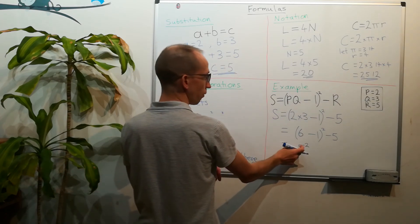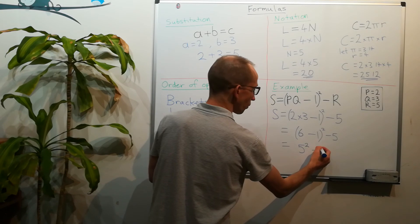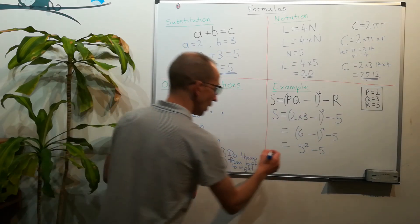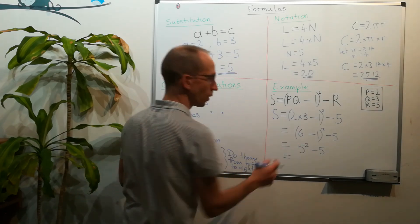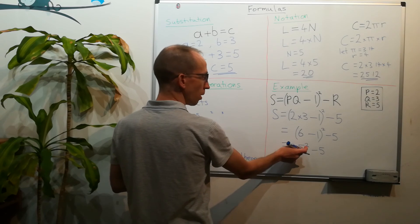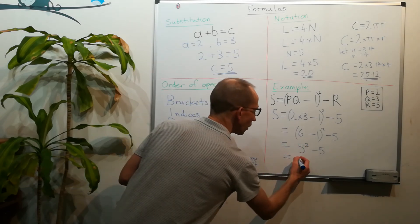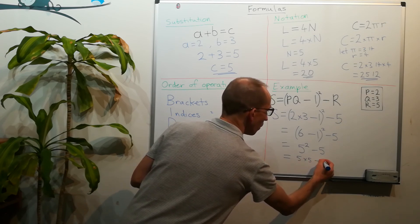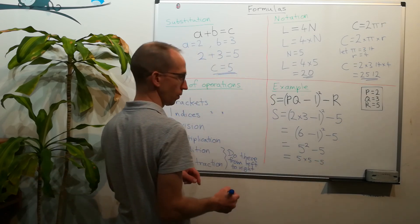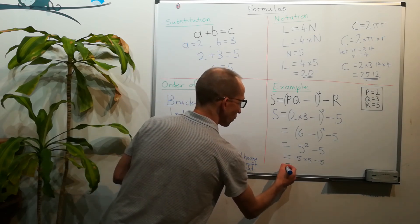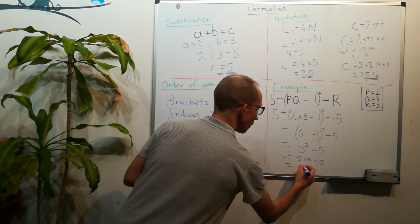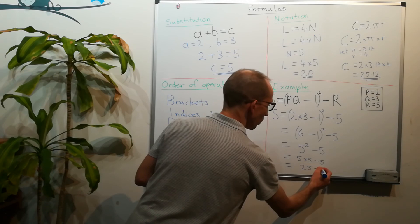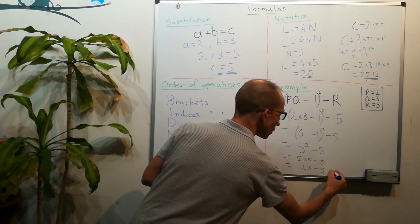Now hopefully you remember that the squared sign means that you multiply the number by itself. So this is 5 times 5 minus 5. And 5 times 5 is 25 minus 5, and we can just squeeze this in.